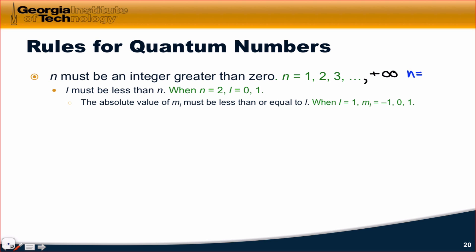once we've decided on a value for n, l must be less than n. So, for example, if we decide on n equals 2, the only allowed values for l are 0 and 1.